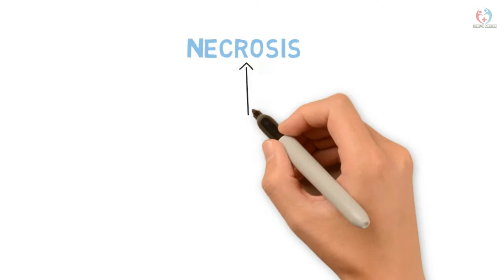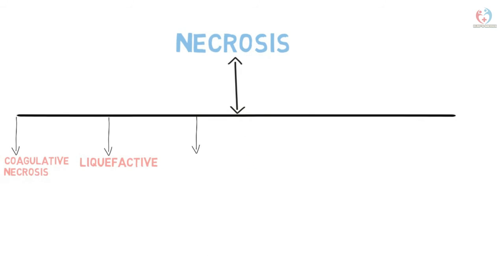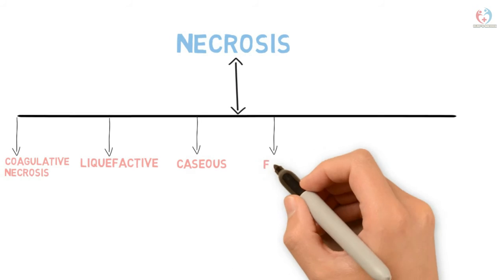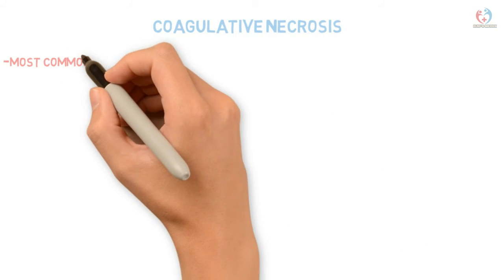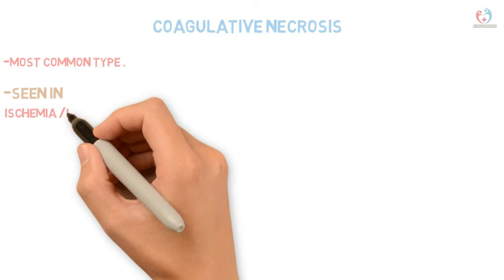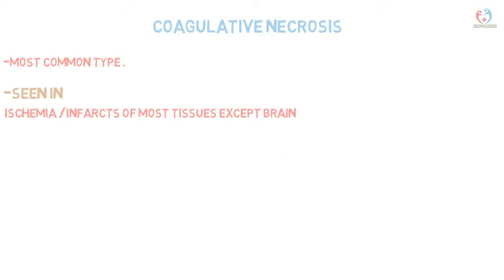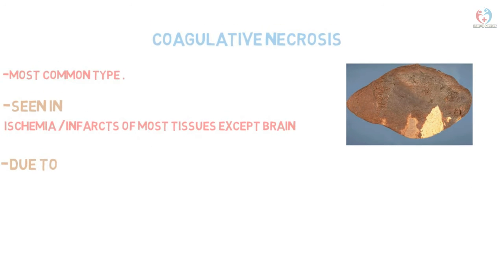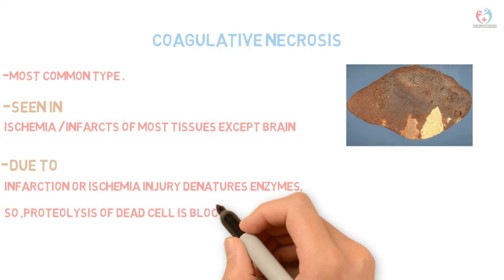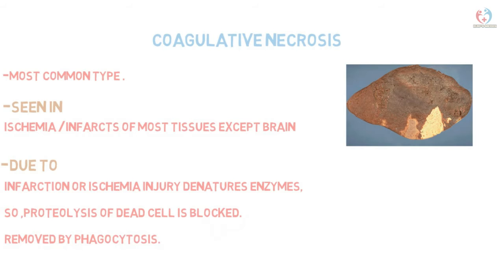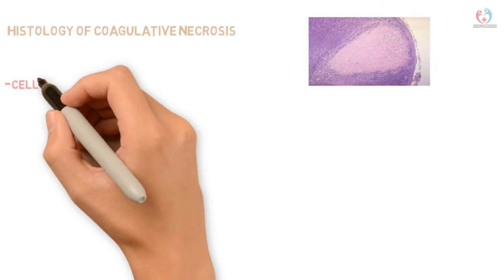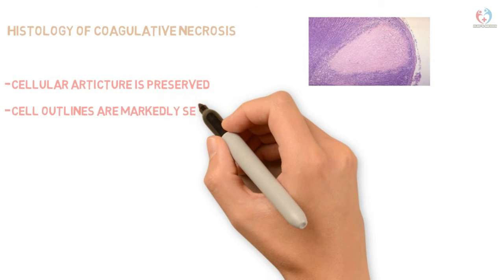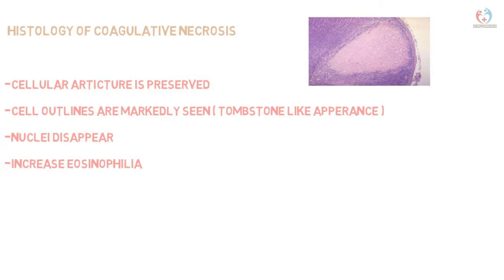Types of necrosis include coagulative, liquefactive, caseous, fat, fibrinoid, and gangrenous necrosis. Coagulative necrosis is the most common type, seen in ischemia and infarction of most tissues except the brain. It is due to ischemic injury which denatures enzymes, blocking proteolysis of dead cells; cells are removed by phagocytosis. In histological sections, the cellular architecture is preserved, with tombstone-like cell outlines, disappearance of nuclei, and increased eosinophilia.